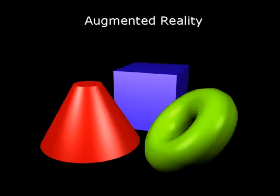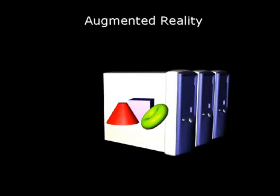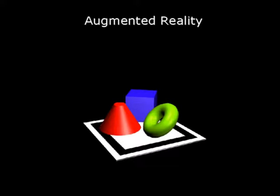In augmented reality, virtual models are created by an artist and stored in a database. According to the context, the relevant model is retrieved from the database, registered, and rendered onto the scene. In many AR applications, using a database implies several difficulties.